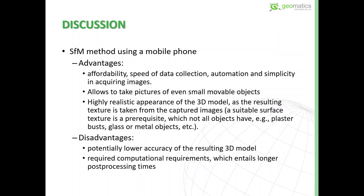Moving to the discussion, we found some advantages and disadvantages. For the structure from motion method using a camera on a mobile phone, this method is very easy to use and very fast in acquiring images. It is simple — you don't have to study hard to use it. This method also allows us to create 3D models of very small objects or objects in very small rooms.